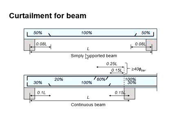As for the continuous beam, 30% can be applied at 0.1L and 0.15L for the intermediate support.